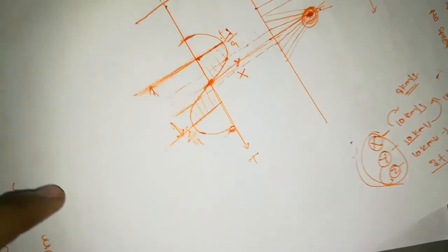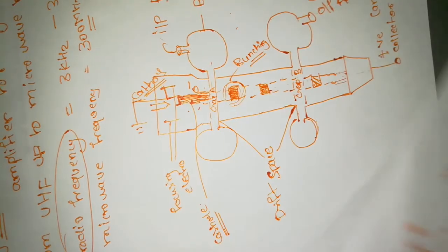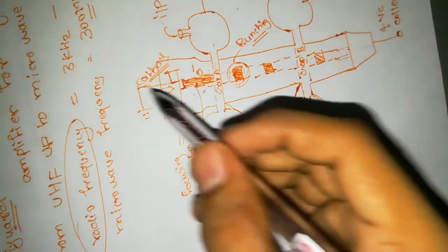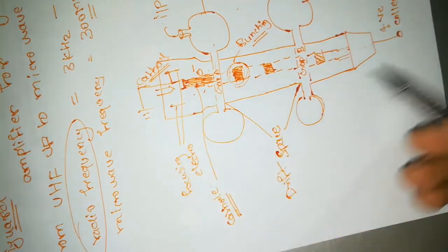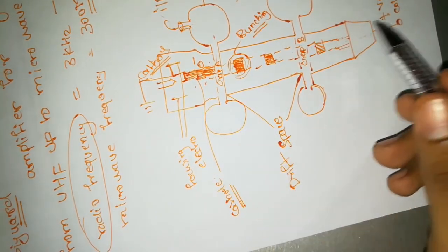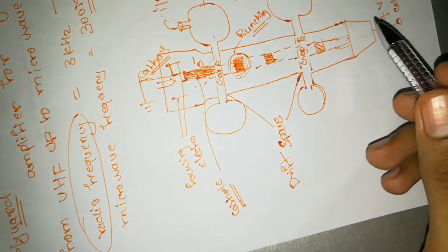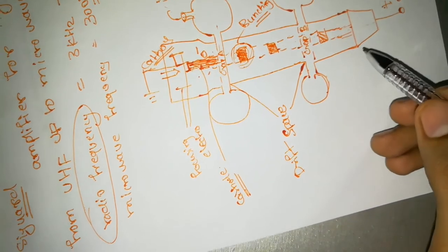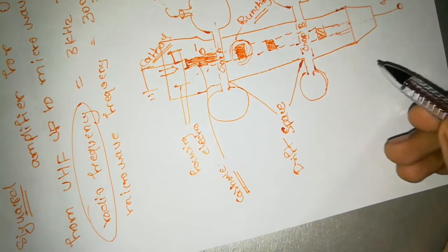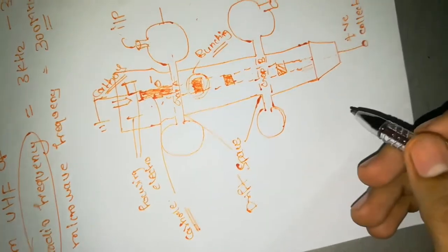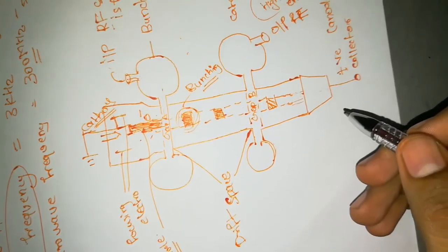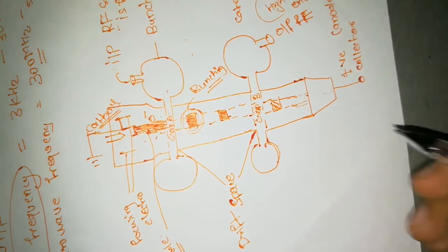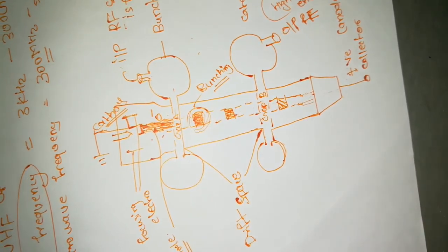This is the basic working of the two-cavity klystron. The PDF for all this content is available in the description link — you can download it from there. Thank you.